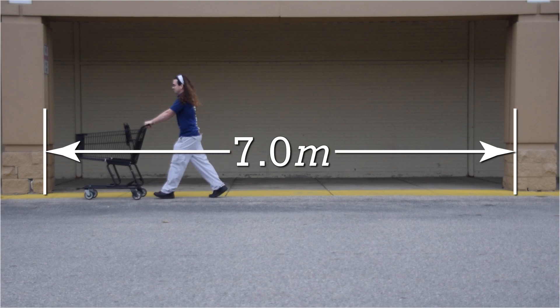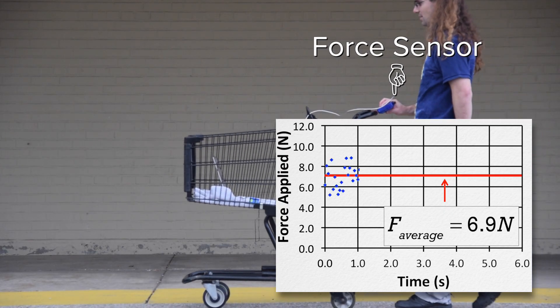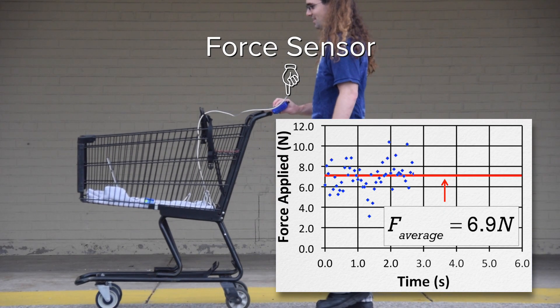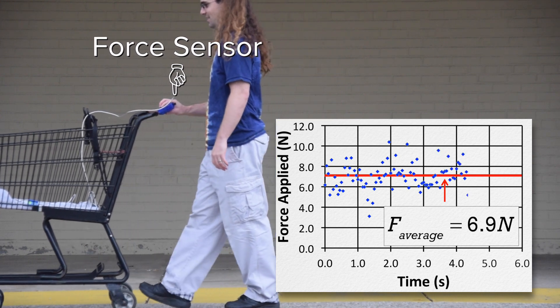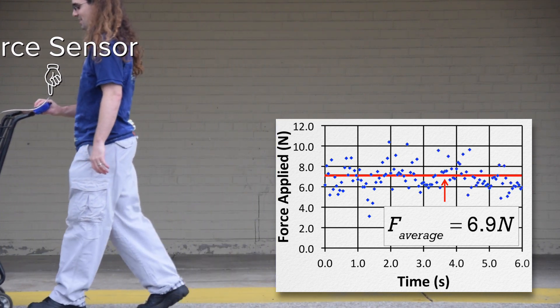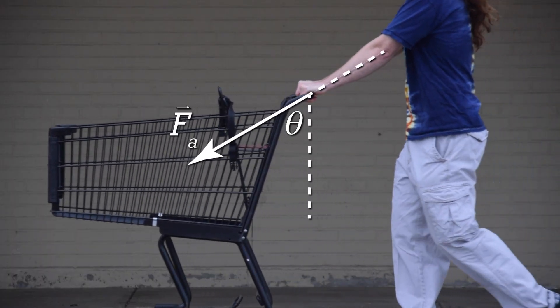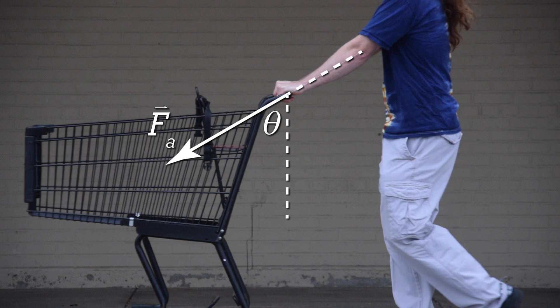Mr. P: Also, in order to get actual numbers here for this force, I used a force sensor to measure that 6.9 newton force. And as far as the angle is concerned, you can see the force I am applying is down and to the left. The 59 degree angle which I measured is between the force applied and the vertical.